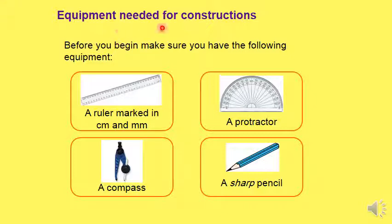The equipment needed for construction, what do we need? We need a ruler, protractor, a sharpened pencil, and a compass.